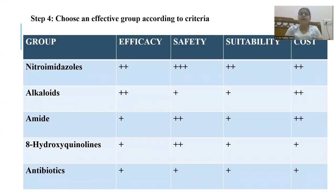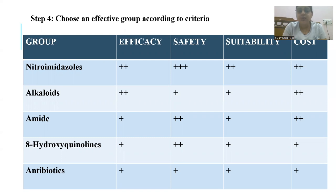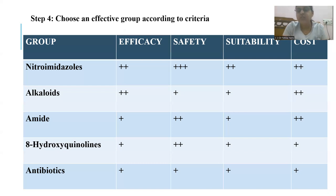The nitroimidazole group is the most efficacious group — a broad-spectrum antibiotic effective against protozoal infections as well as anaerobic bacteria. These drugs release nitric oxide free radicals in the intestinal mucosa, which kill the protozoa. They are much safer; only mild side effects occur such as GI disturbances, metallic taste, or a disulfiram-like reaction. They are orally given, suitable, and low in cost.